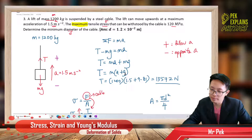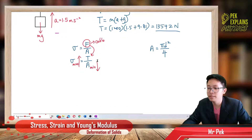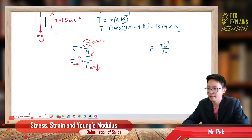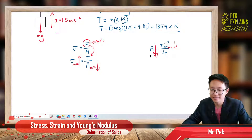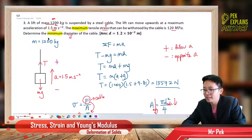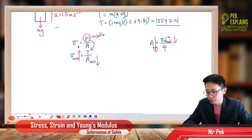Maximum stress means minimum area. When you have the minimum area, you have the minimum diameter — that is why the question asks for minimum diameter. Stress is inversely proportional to area, and therefore also inversely proportional to diameter. So maximum stress corresponds to minimum area, which means minimum diameter.